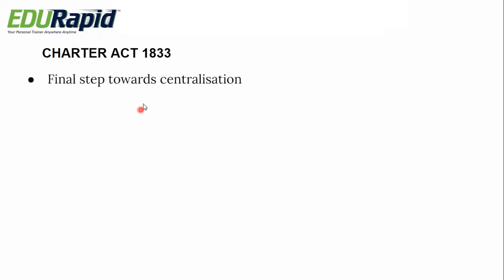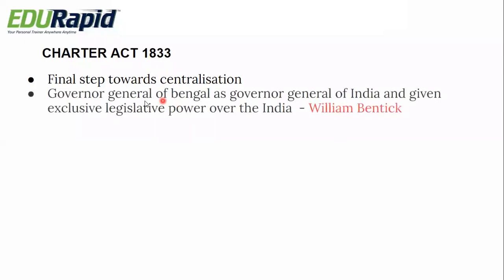Next is the Charter Act of 1833. There are basically three Charter Acts: 1813, 1833, and 1853. For examination purposes, 1833 and 1853 are the important ones. The Charter Act of 1833 was the final step towards centralization, which had started with the Regulating Act of 1773. It converted the Governor General of Bengal into the Governor General of India and gave exclusive legislative power over all of India. The first Governor General of India was William Bentinck — this is an important name to remember for examinations.